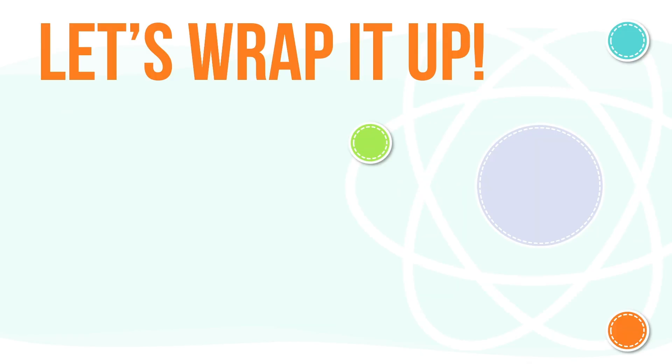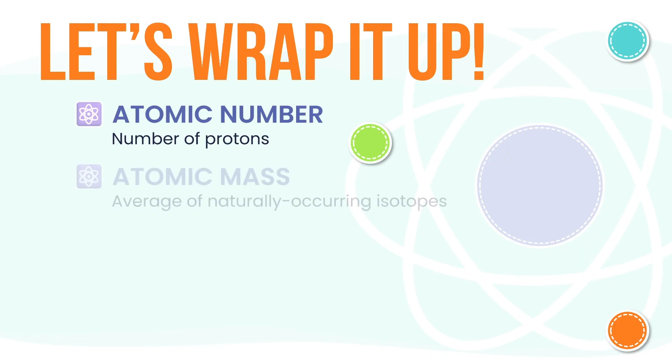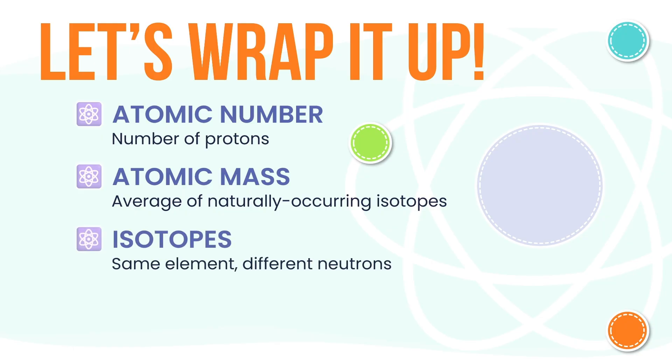So let's bring it all together. The atomic number tells us the number of protons, and that's what defines the element. The atomic mass is the average mass of all the naturally occurring isotopes. Remember, isotopes are atoms of the same element that have different numbers of neutrons. And the mass number? That's just protons plus neutrons—simple and whole.